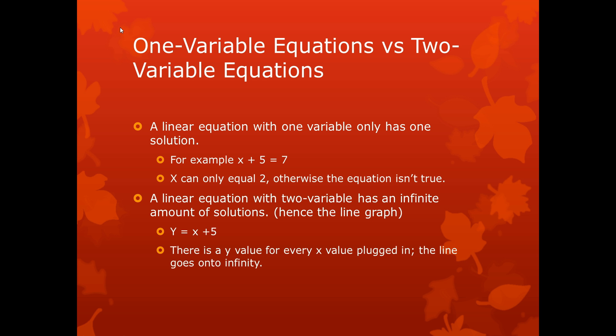However, a linear equation with two variables has an infinite amount of solutions. This is why the graph is a line. So, if I can plug in 0 for x, and I'll get 5 for y, or I can plug in 100 for x, and I get 105 for y, and I can keep plugging in x values, and I'll get a different y value.